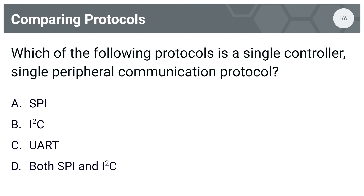Next question: which of the following protocols is a single controller, single peripheral communication protocol? Options are A, SPI; B, I2C; C, UART; or D, both SPI and I2C. The answer is C, UART. I2C supports multiple controllers and multiple peripherals. SPI supports one controller and multiple peripherals.